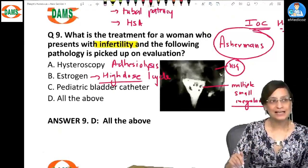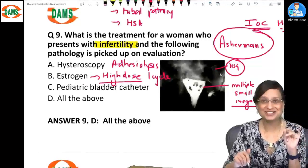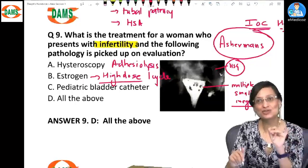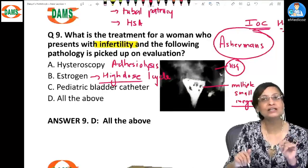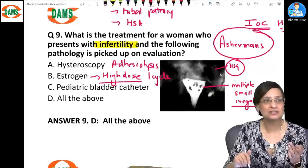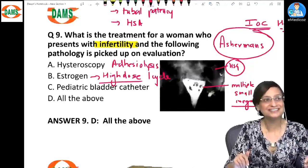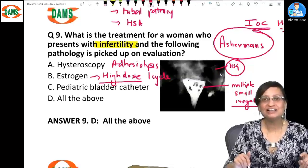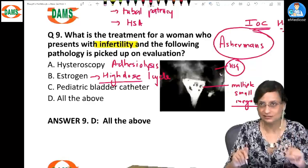And yes, we will put a pediatric bladder catheter in the uterus, not in the bladder. Okay? So the catheter is put in the uterus to prevent reformation of the adhesions or to prevent recurrence. Yes, so to prevent the recurrence we are going to put the bladder catheter for one cycle.